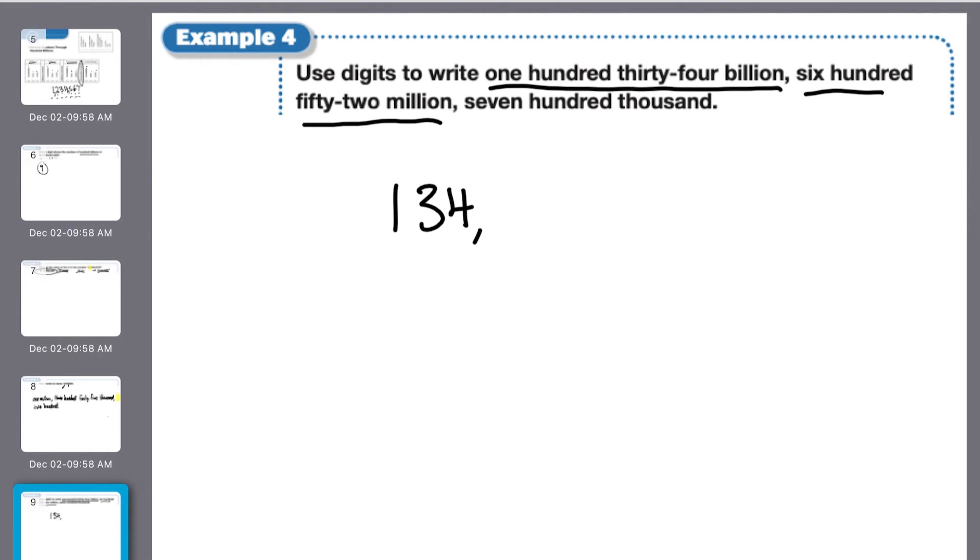Six hundred fifty-two million, six five two. Seven hundred thousand, seven hundred, and that's thousand, so three more zeros. And there you have it. One hundred thirty-four billion, six hundred fifty-two million, seven hundred thousand.